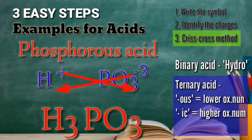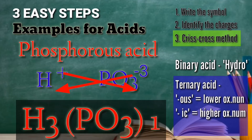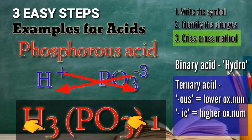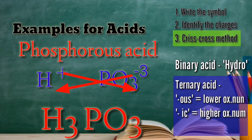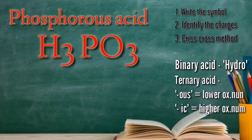Should we cancel out or eliminate the 3? The answer is no. Originally the formula should be H3(PO3)1, but the 1 is an imaginary number, so it is not needed and there is no parenthesis. We can remove the parenthesis because there is no subscript to separate from the 3. So our phosphorous acid formula is H3PO3.